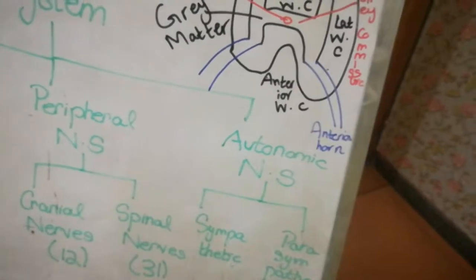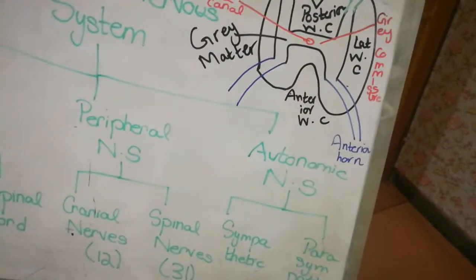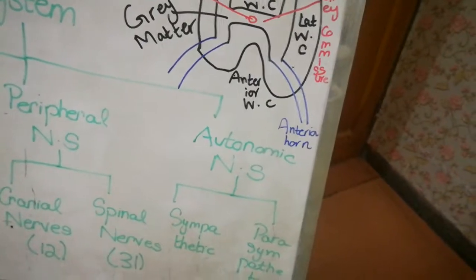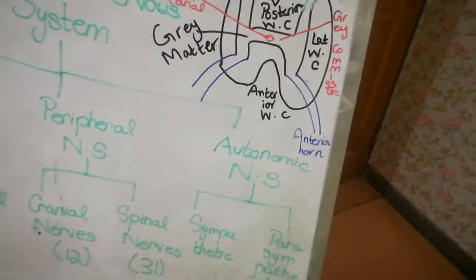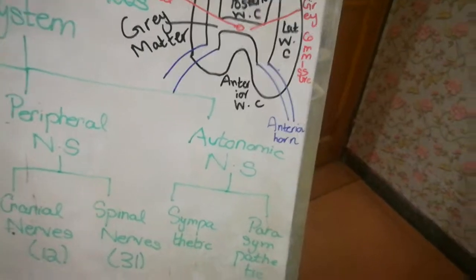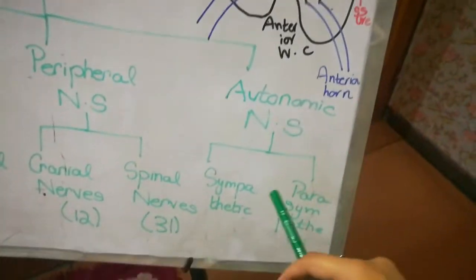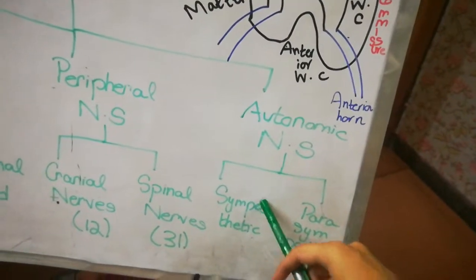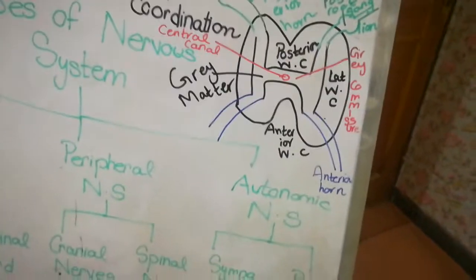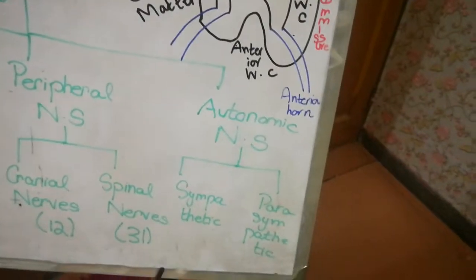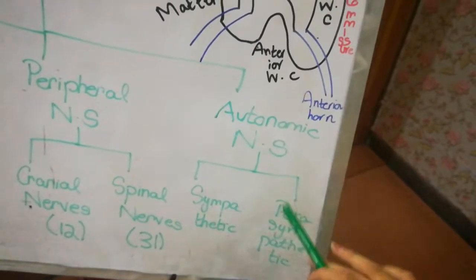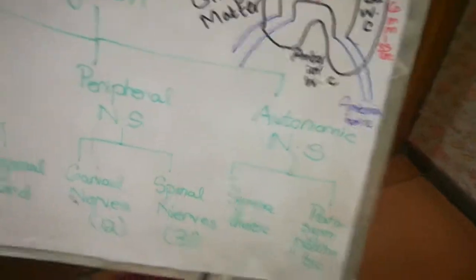Let me give you a simple example to help make a clear concept about sympathetic and parasympathetic. Any student, whether medical, high school, or middle school — whenever you have exams, you get some sort of stress or tension, thinking the course is so big. At that time the nervous system that is functioning is the sympathetic nervous system. And then when exams are done and you can relax, the nervous system that is activated is the parasympathetic nervous system.